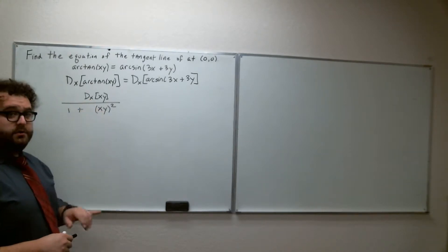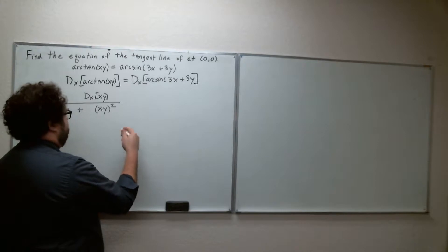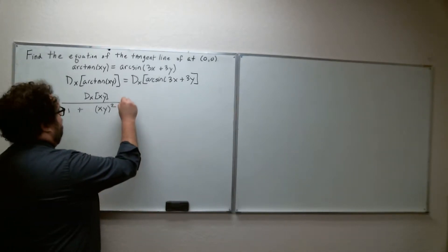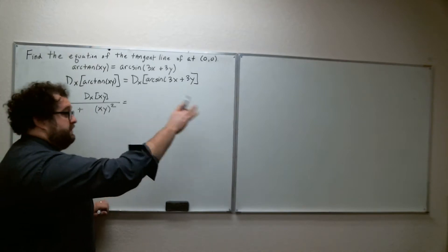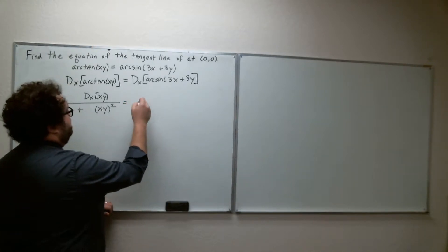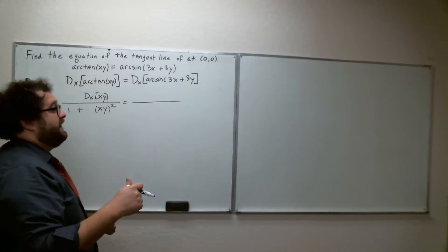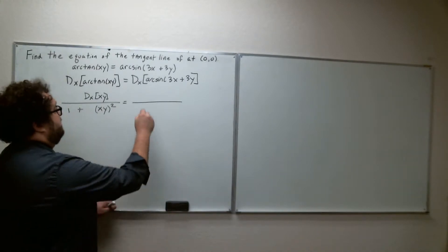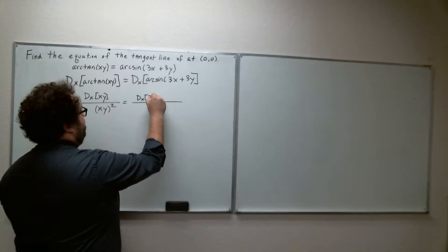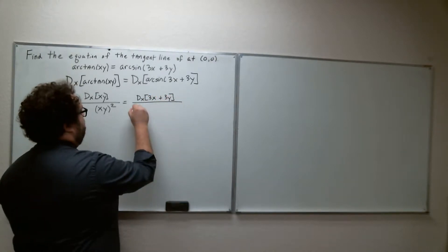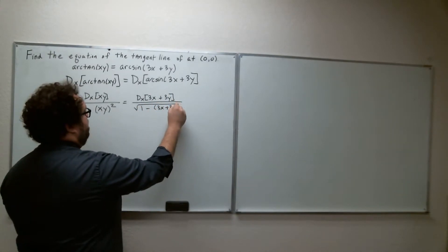That's the derivative of arctan using u-prime over 1 plus u squared. Now moving to the right-hand side: the derivative of arcsin is u-prime over the square root of 1 minus u squared. So we need to write the derivative of u, where u is the inside function 3x + 3y, over the square root of 1 minus (3x + 3y) squared.